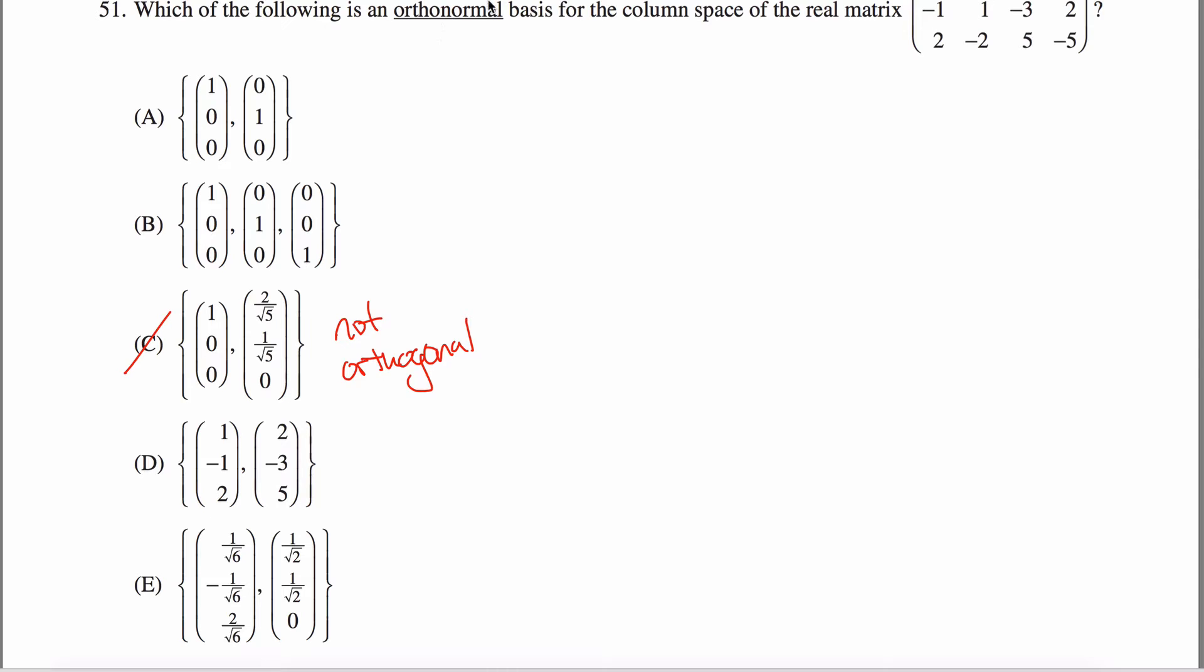Orthonormal, kind of two words in there - the orthogonal part and the normal part. Not normal like a normal vector, but normal as in these have to be unit vectors. So what's the length of this vector right here? That's one because the square root of one squared plus zero squared plus zero squared, that is one. And this is one.